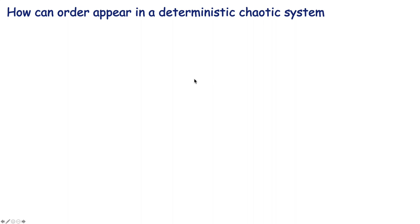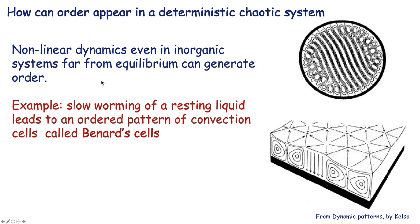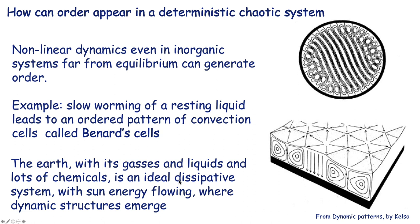How can order appear in a deterministic chaotic system? Non-linear dynamics, even in an organic system apart from equilibrium, can generate some order. A good example is slow warming of a resting liquid lead to an ordinary pattern of convection, with these cells called Bernard cells. Some order occurs because of these convection currents. So even preparing to boil some spaghetti, you can see this order in a system which is entirely inorganic. The Earth, with its gases and liquids and lot of chemicals, is an ideal dissipative system with sun energy flowing, where dynamic structure emerge, just like the Bernard cells.